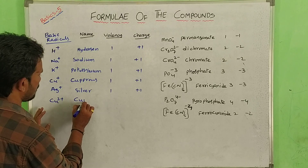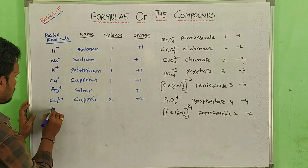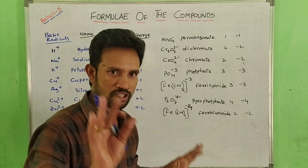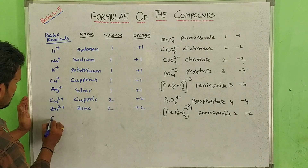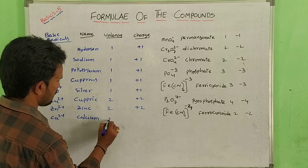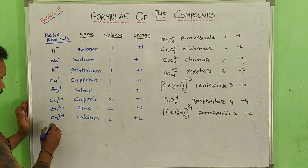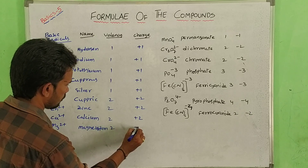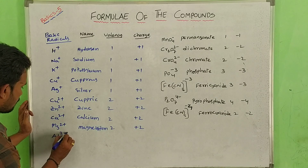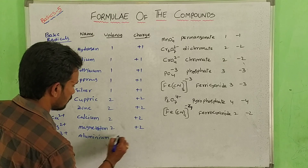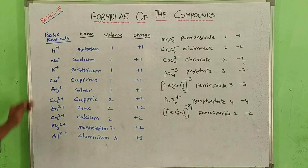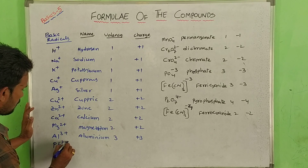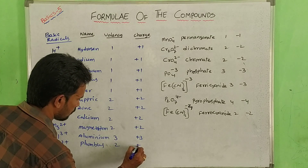Next, Cu 2 plus — copper. Next, Zn 2 plus — zinc. Next, Ca 2 plus — calcium. Valency 2, charge plus 2. Next, Mg 2 plus — magnesium. Valency 2, charge plus 2. Next, Al 3 plus — aluminium. Valency 3, charge plus 3. Next, Pb 2 plus — plumbous. Valency 2, charge plus 2.